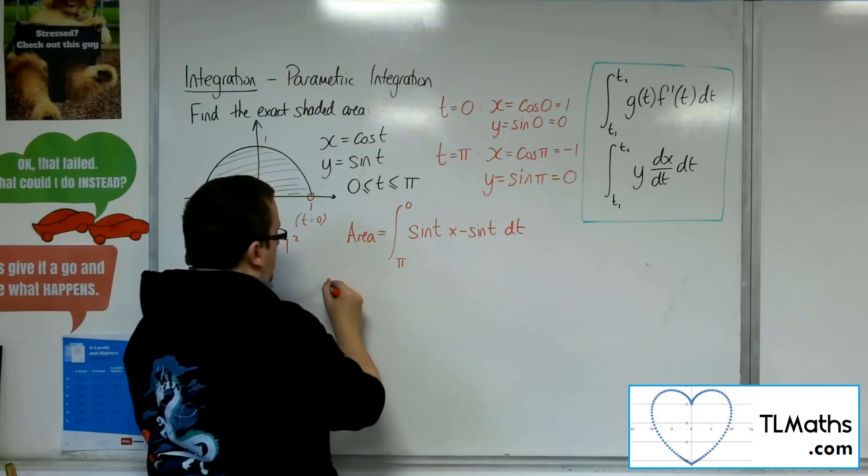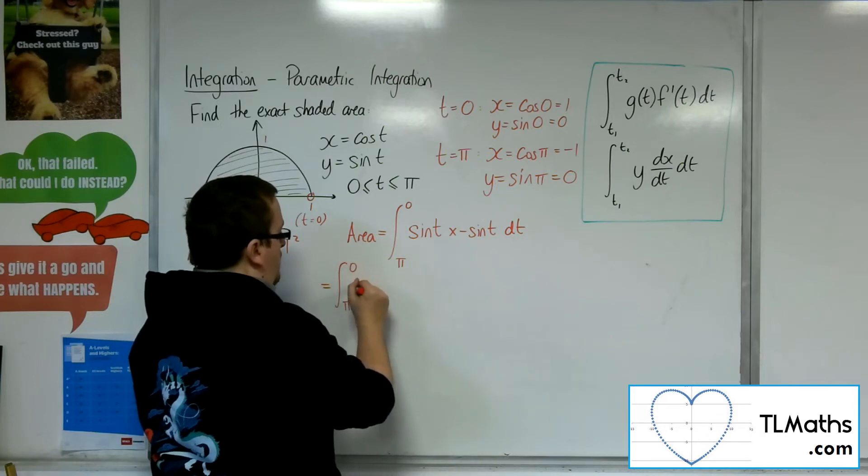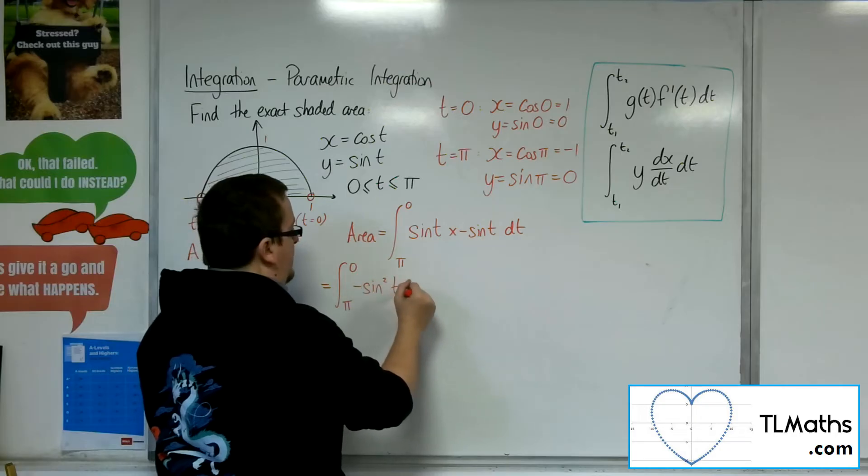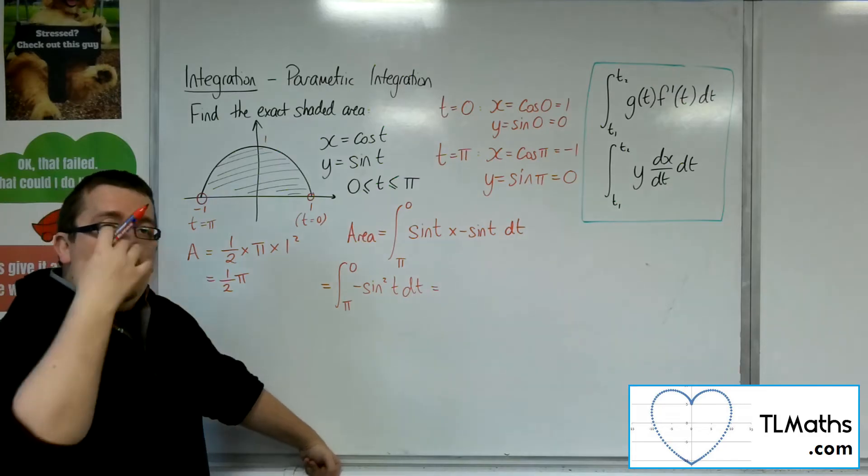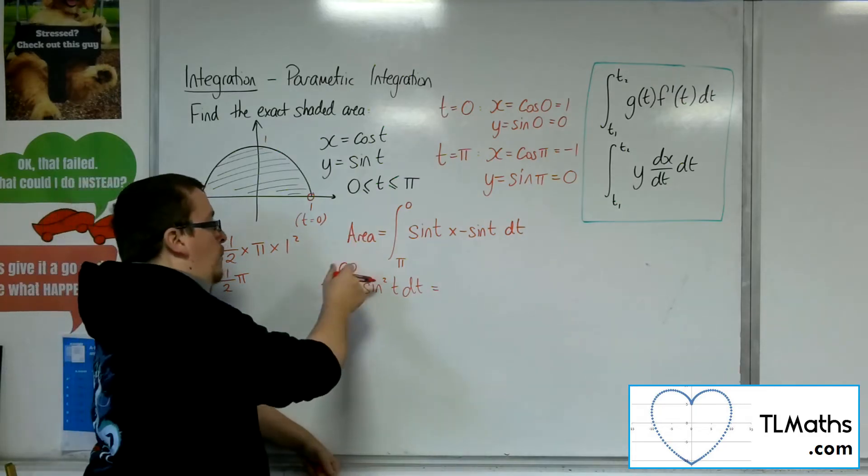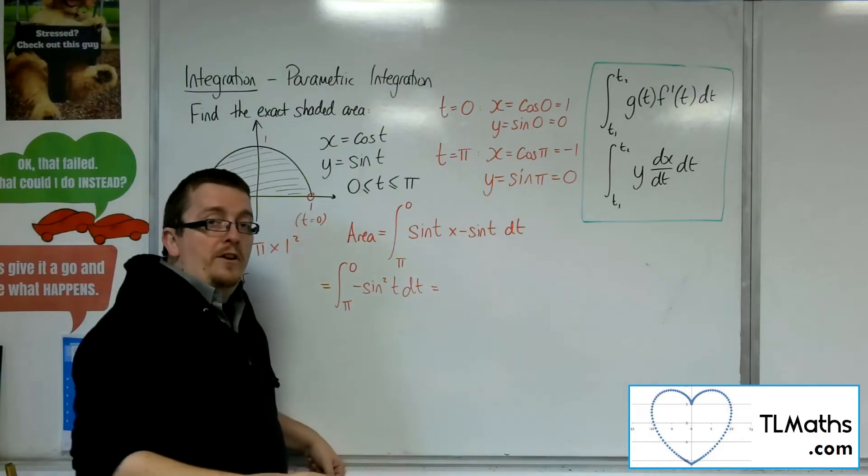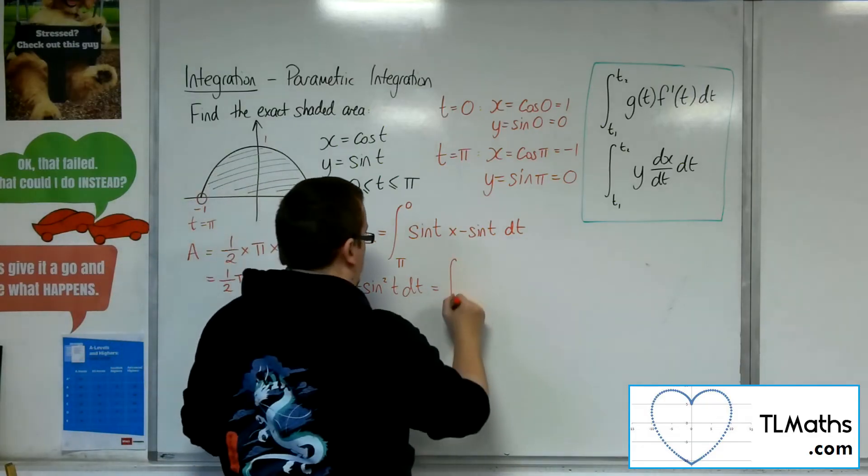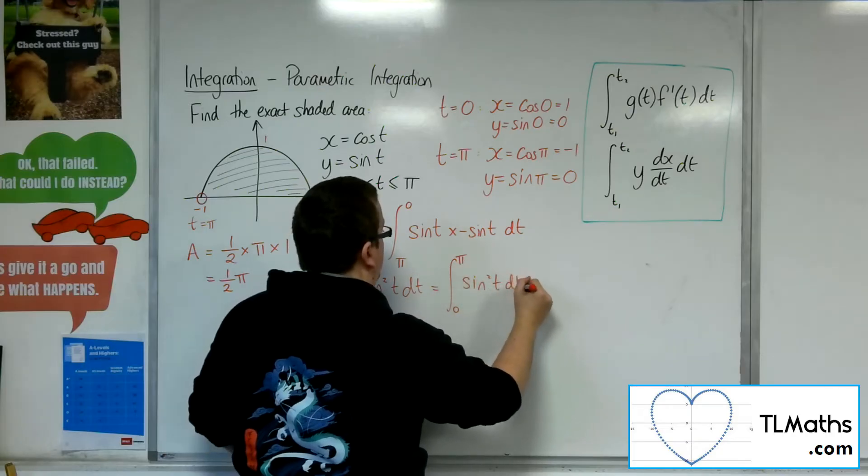So what's that? Well, we've got this to be equal to pi to 0 of minus sine squared t dt. Now, if you remember from the previous video, if you've got the limits one way around, you can flip them and you can multiply through by minus 1 all at the same time. So 0 to pi of sine squared t dt.